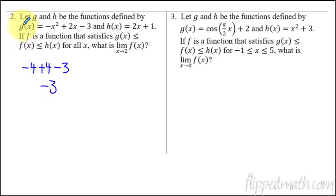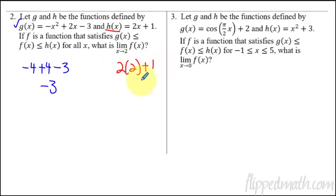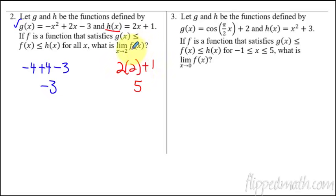So that's the limit of g. Now let's do h — I'll do h in red. So we plug in two: two times two plus one, four plus one is five. So the limit of g as x approaches two is negative three, and the limit of h as x approaches two is five. What that tells us is the limit as x approaches two of f has to be somewhere in between negative three and five. That's all we know.